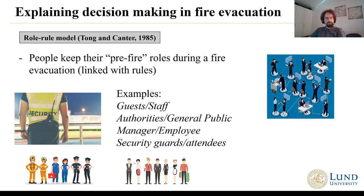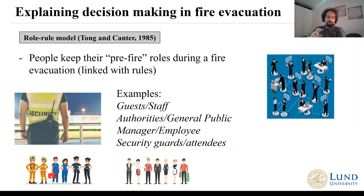Another very widely used theory is the role-rule model, which tells us that people keep their pre-fire roles during a fire evacuation. For instance, if we have guests and staff, authorities or general public, managers or employees, security guards or attendees — people will tend to keep their roles. So someone like an authority, staff member, manager, or person with a leading role even without a fire emergency has a much more important and influential role during a fire emergency. It's very important that they behave in the most appropriate way, because they have a much higher power to influence the course of events.